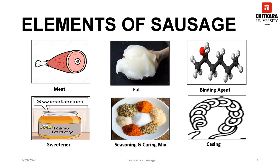A ratio of 25% fat is used in force meat to prepare stuffing for sausages. Fat is one of the most important ingredients in sausage making; generally pork fat is used. Binding agents help to bind the meat together. A protein in the meat called myosin helps to naturally bind the meat. In many cases, soya protein and milk powders are also used as binding agents. Other traditional binding agents like egg, cream, and panada are also commonly used.